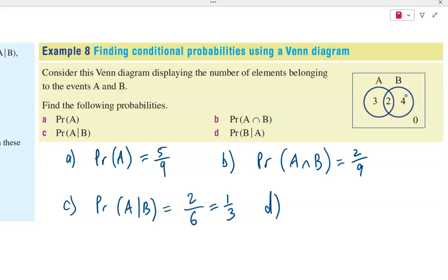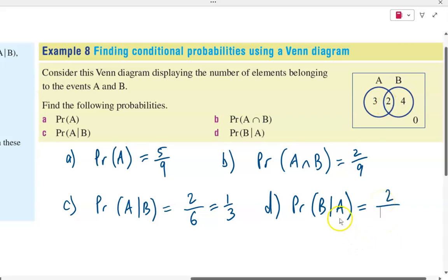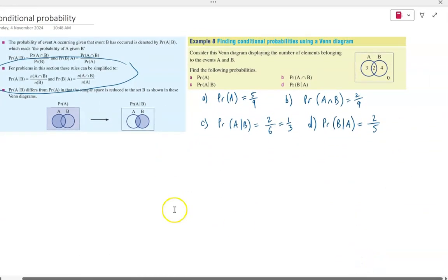Question D is just the opposite question. What is the probability of event B given A? So again, our top value will be the value inside the intersection, which is two. And the bottom value will be the number inside event A, or both of those numbers. So two and three added together, which gives us five. So the probability of B given A is two over five. That's pretty much it for conditional probability. It is pretty straightforward once you understand that set notation.